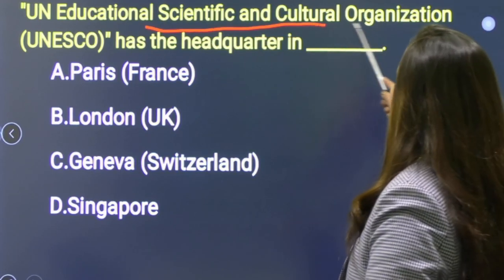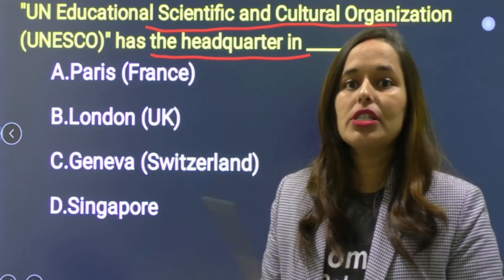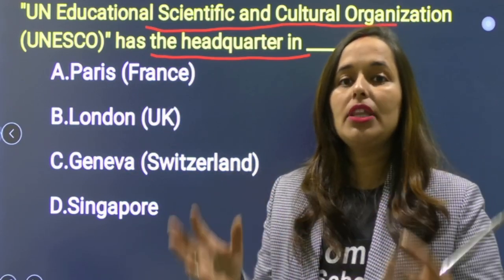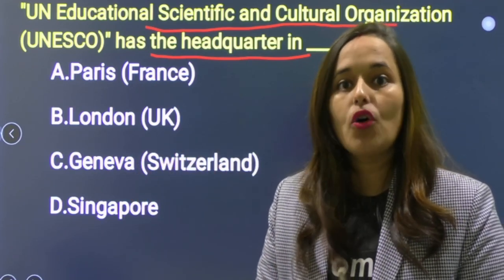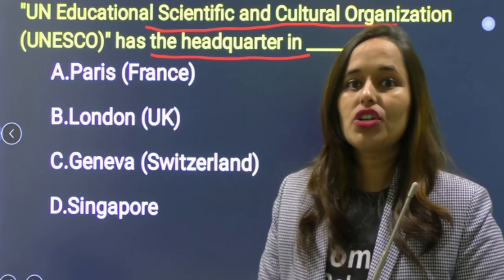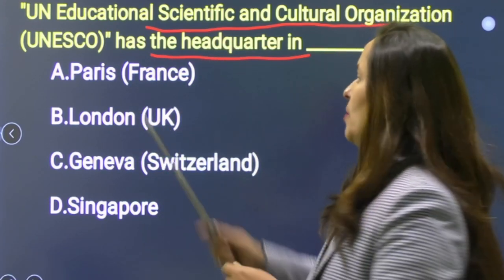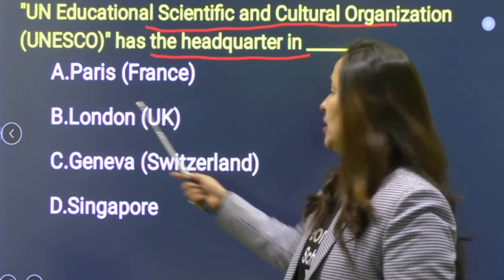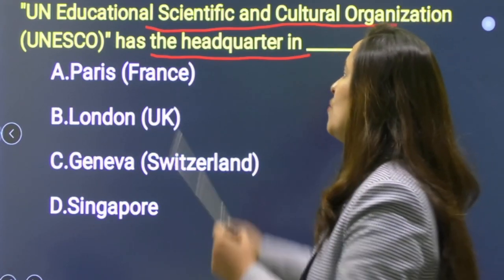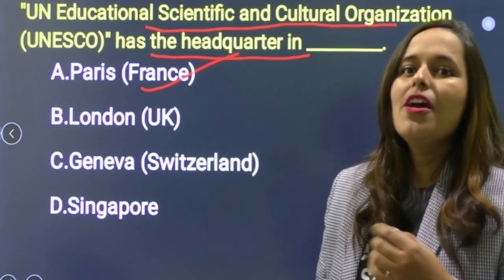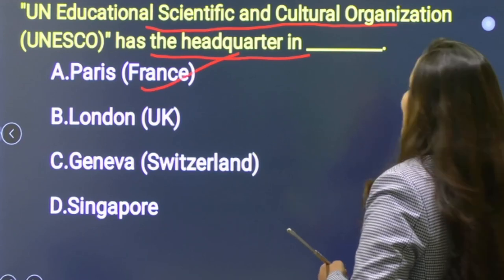Next: UN Educational Scientific and Cultural Organization — UNESCO has its headquarter in which city? UN से कई organizations जुड़ी हैं जैसे WHO, FAO। Options: France/Paris, United Kingdom/London, Switzerland/Geneva, Singapore. UNESCO का headquarter है France, Paris — Paris City में। Option A is correct.